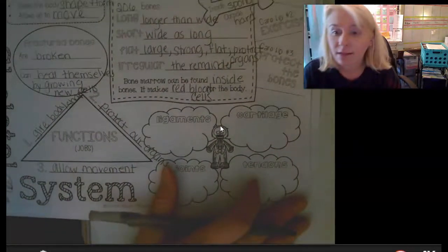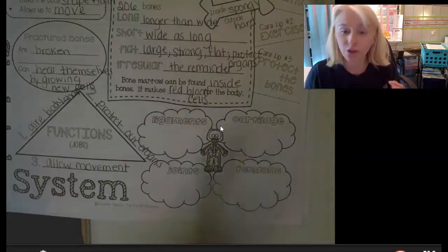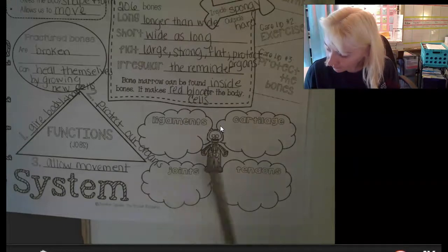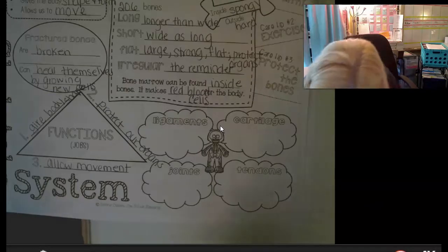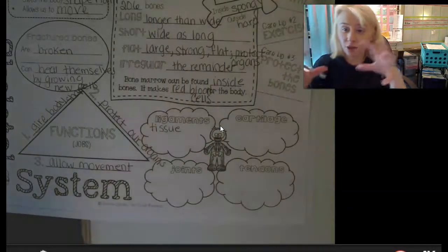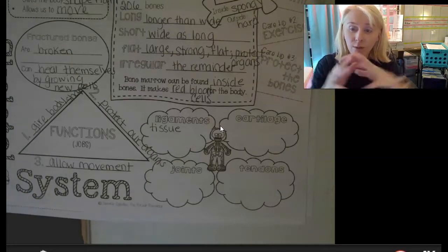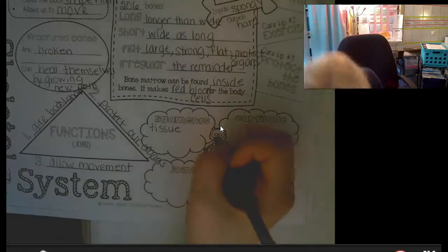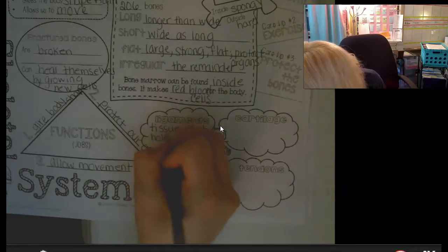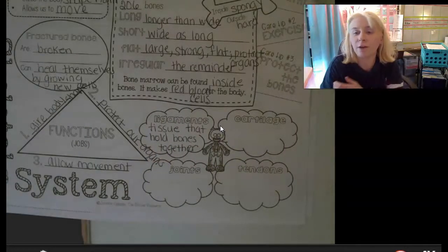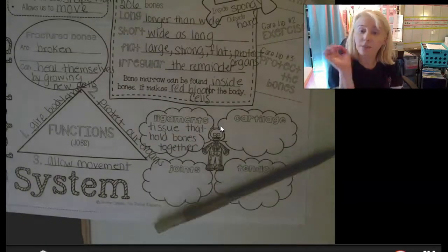Now we're going to talk about four terms that are also part of our skeletal system. Ligaments are tissue — remember, when you have a bunch of cells grouped together performing the same job they form a sheet or band called tissue. Ligaments are tissue that holds bones together. If you watch sports, you might hear about an athlete who has torn a ligament — that's the tissue connecting one bone to another.